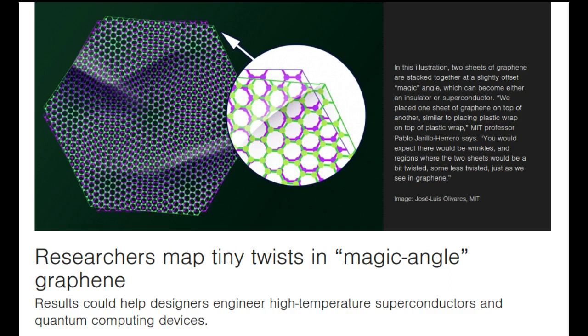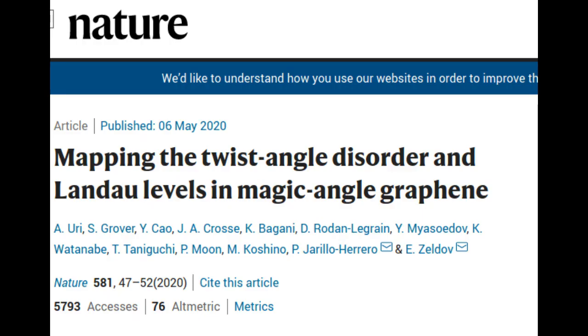Now, the MIT team reports their latest advancements in graphene twistronics in two papers published in the journal Nature. In the first study, the researchers have imaged and mapped an entire twisted graphene structure for the first time, at a resolution fine enough that they are able to see very slight variations in local twist angle across the entire structure.